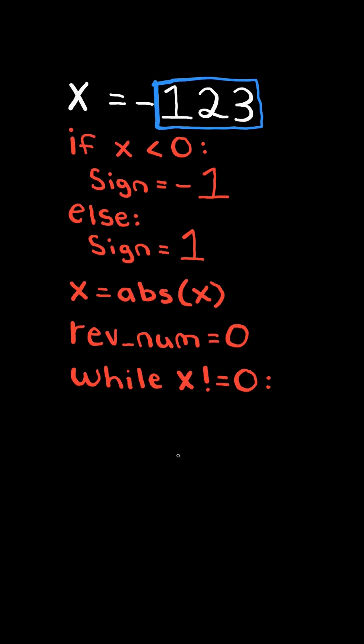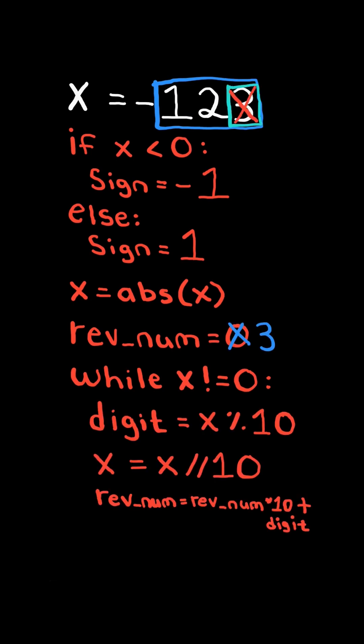While x does not equal zero, we get the last digit and remove it from x. We add the digit to reverse num and continue this process.